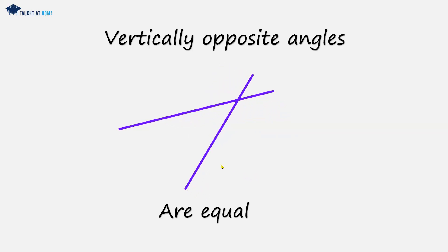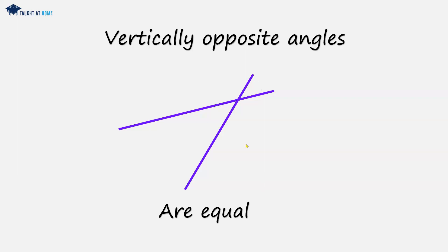We might get something like this — kind of like chopsticks — where the vertex is this point. We can say that angle a is vertically opposite angle b and these will be equal. Likewise, we'll have angle c and angle d, which are also vertically opposite.